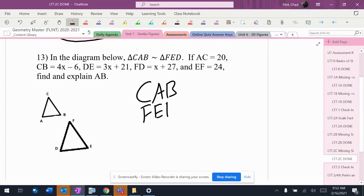CAB and FED are my two triangles. I'm going to pair my sides up. CA pairs up with FE, AB pairs up with ED, and CB pairs up with FD. Now for the side lengths.